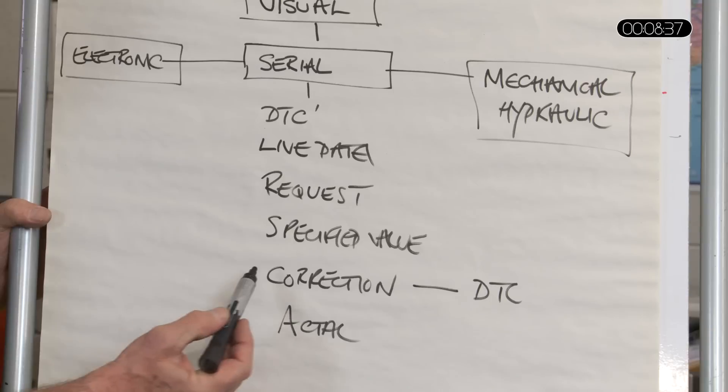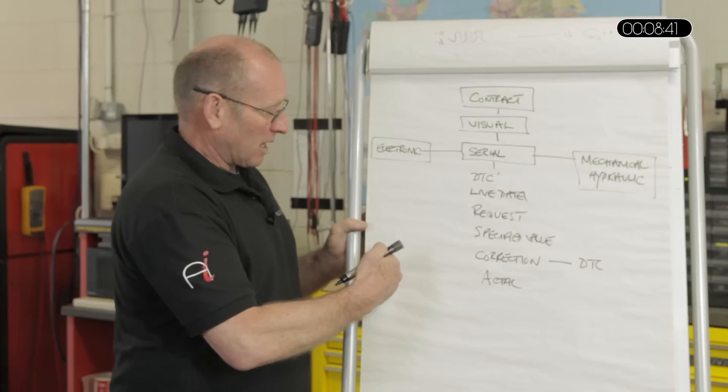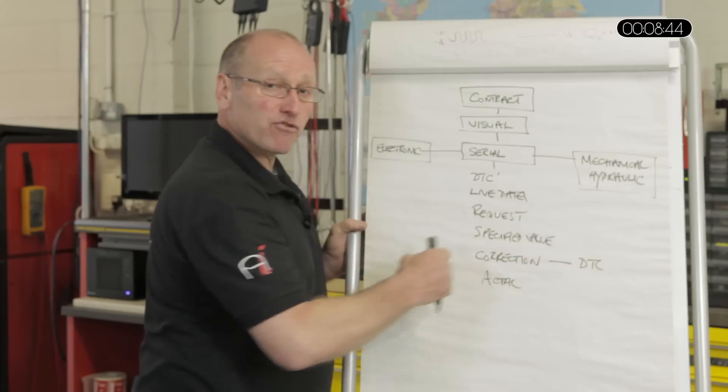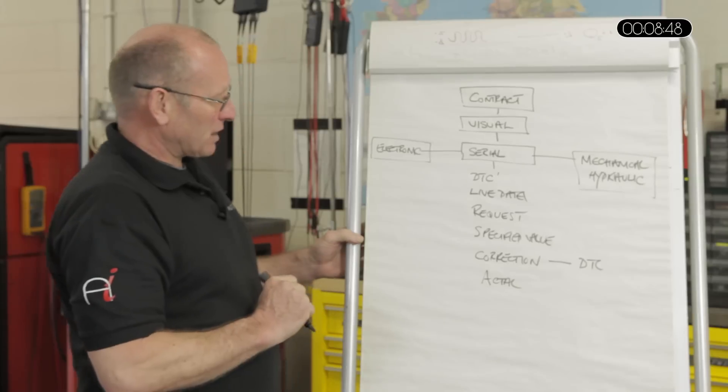So that will establish where the fault symptoms exist. But where there is a problem, say where correction is taking place, it could be a result of an electronic issue or a mechanical or hydraulic issue. So let's take a look at the next route, which is electronic.